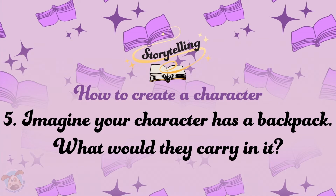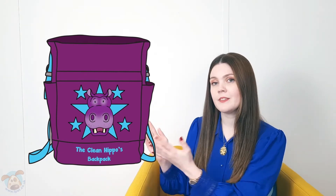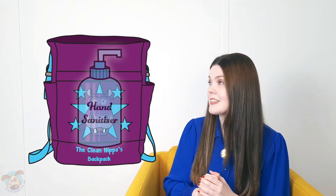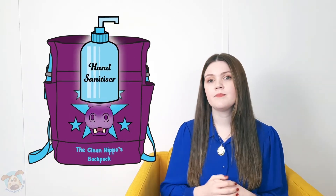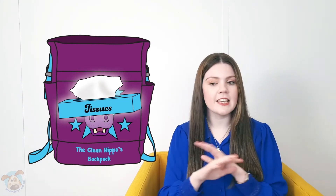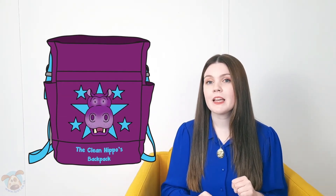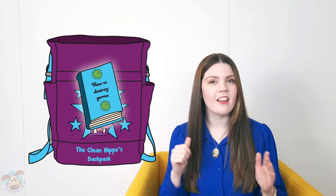Imagine your character has a backpack — what would they carry in it? I want you to pick four objects your character needs on a daily basis. Here is my hippo's backpack. The first object is hand sanitizer — my character needs hand sanitizer so he's always clean throughout the day. His next object is tissues — he needs tissues in case there's an accident, a spillage, or a little bit of mud on him, so he's always clean at all times.